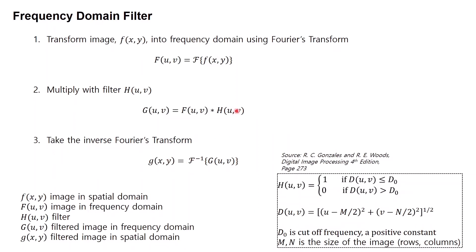The filter H can be any filter, and in this tutorial we use an ideal low-pass filter. Here is the formula of our ideal low-pass filter. You can check this textbook to read more about it. In the ideal low-pass filter, there are some parameters: D is the radius from the center and D0 is the cut-off frequency. We can set any positive number for D0. The value in filter H will equal 1 if radius D is less than or equal to D0, and H will equal 0 if D is larger than D0.